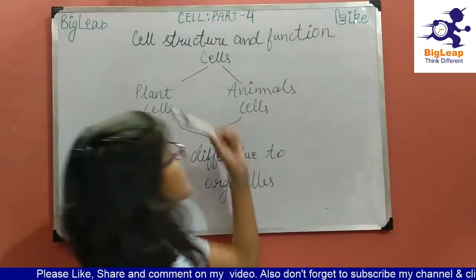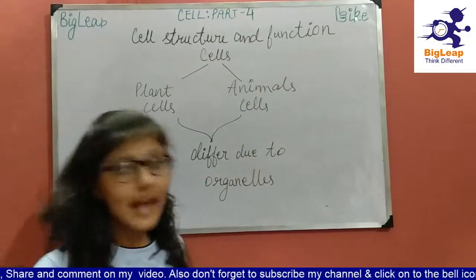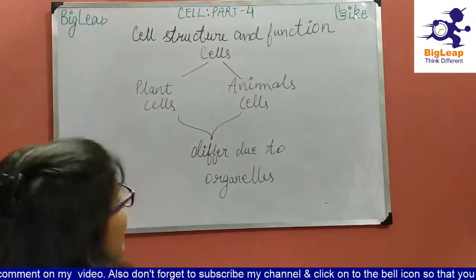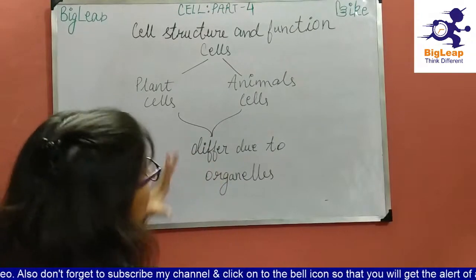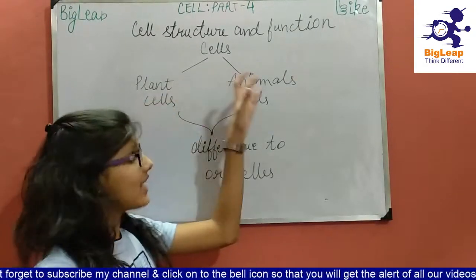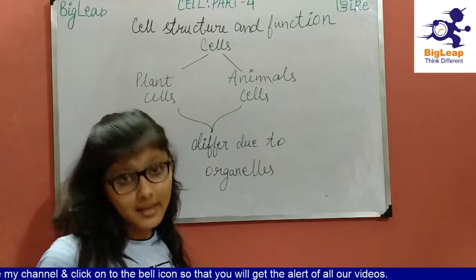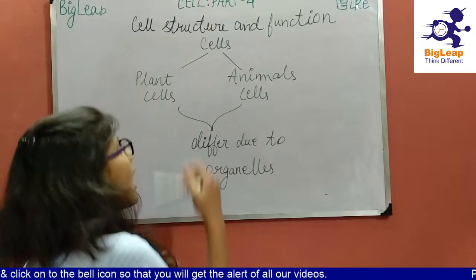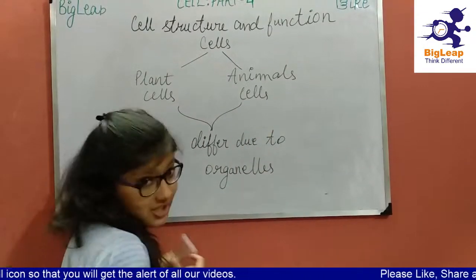Now let's look at cell structure and function. Cells have an important division — the distinction between plant cells and animal cells. Plant cells and animal cells differ due to their organelles.